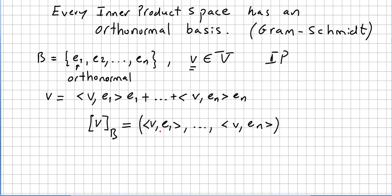So it will be the inner product of v, e₁, and so on, v, eₙ, the inner product of v, eₙ. So we are writing the vector v based on the orthonormal basis B.